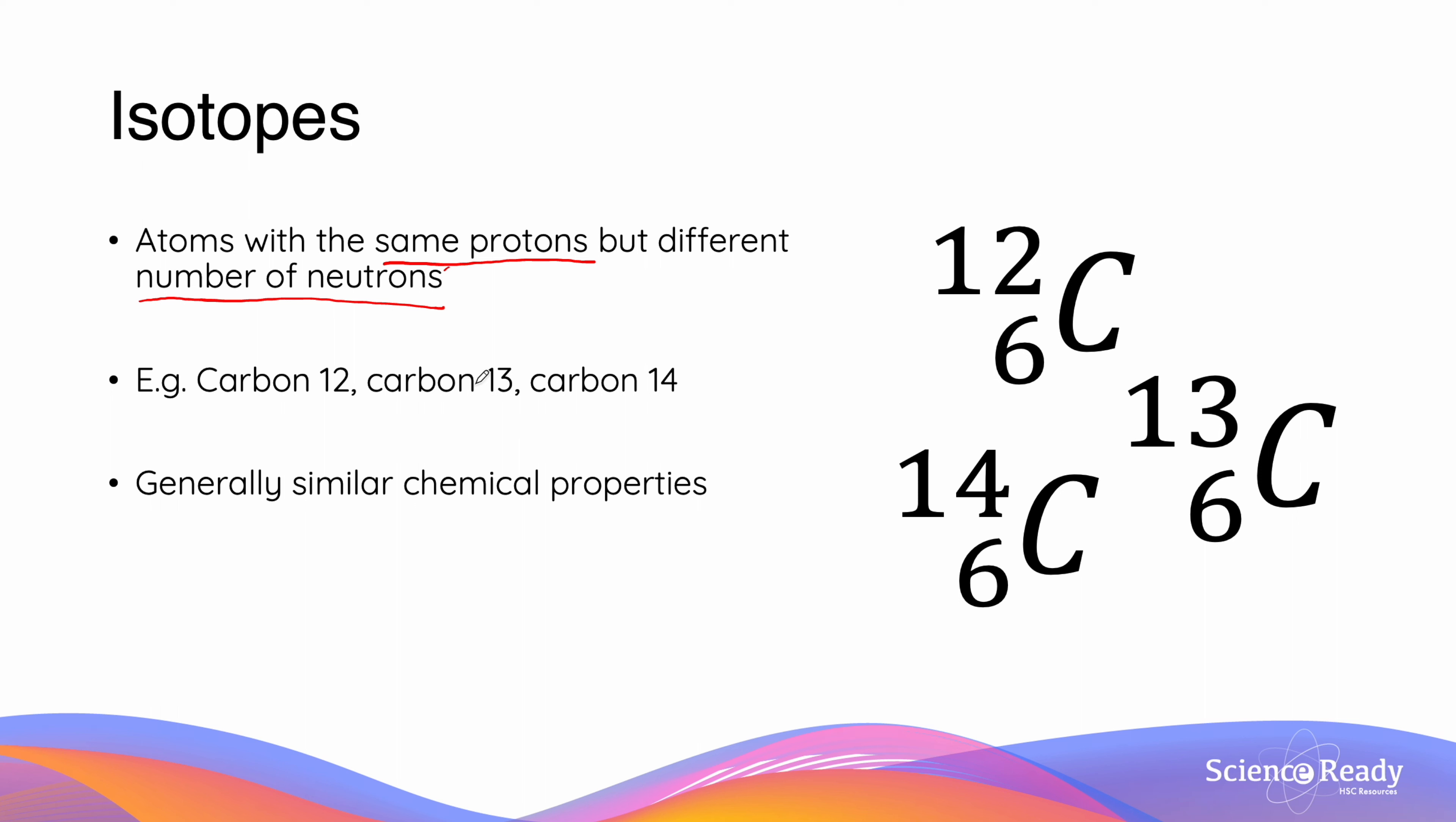Isotopes generally have similar chemical properties because a difference in one or two neutrons is usually only a small percentage of its overall mass, although this may not be true for something like hydrogen, which can exist as deuterium.